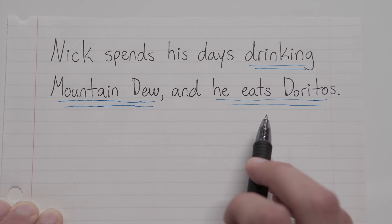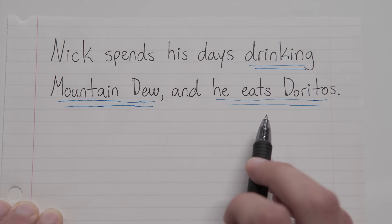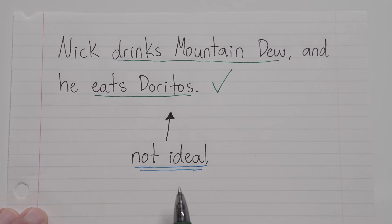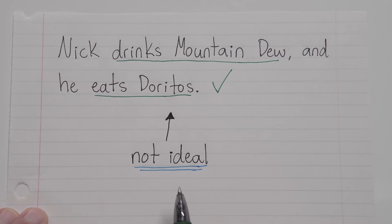And what would we change it to? Well, we have an -ing activity, drinking Mountain Dew, so we should change the second part to match that, to become an -ing activity as well, which means eating Doritos. Now, if you wanted to change the first part if you're really set on that, you could, but you'd have to change it to something like this: Nick drinks Mountain Dew, and he eats Doritos. But again, the best way to do it is to keep it as true as possible to the original sentence, so that would mean changing the second part.